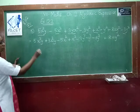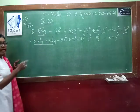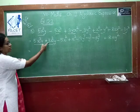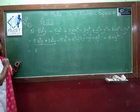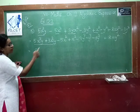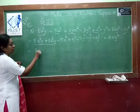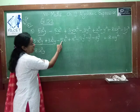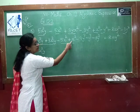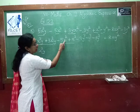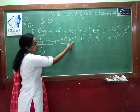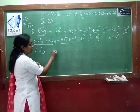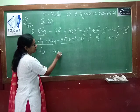Now we do the addition of these two terms. We directly do the addition because we know the variables remain the same, so we add the numerical coefficients. 5 plus 3 gives you 8, so the variable x²y gives 8x²y. Then minus 5x² plus x² — the numerical coefficient here is 1, so minus 5 plus 1 gives minus 4, and the variable is x².